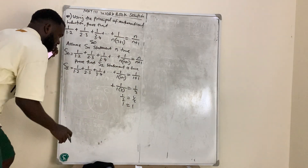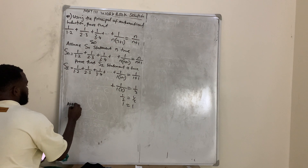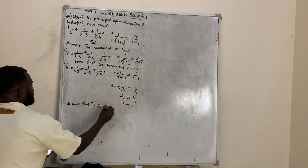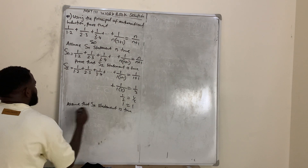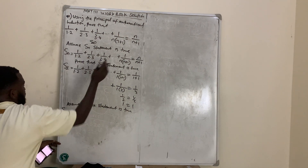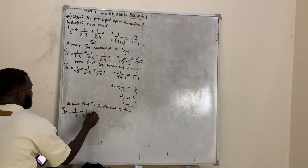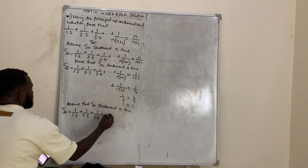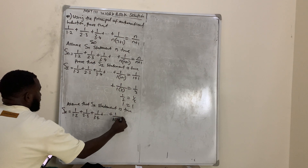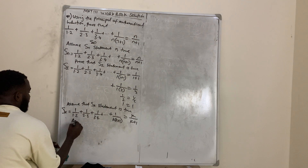The next step is to assume that the Sk statement is true. Sk means substituting k for n, giving: 1/(1·2) + 1/(2·3) + 1/(3·4) + ... + 1/(k(k+1)) = k/(k+1).